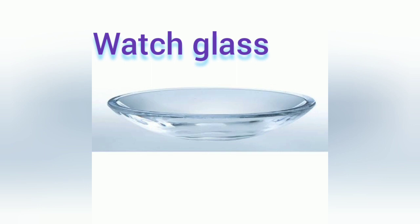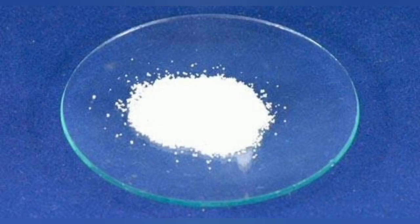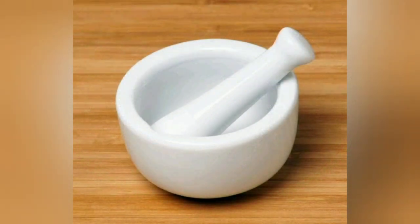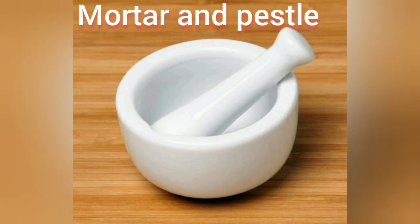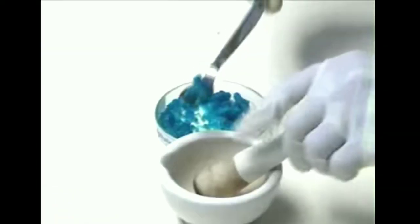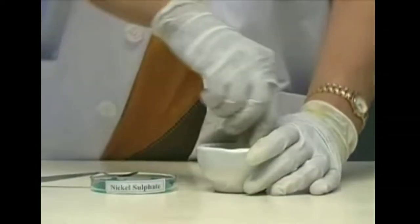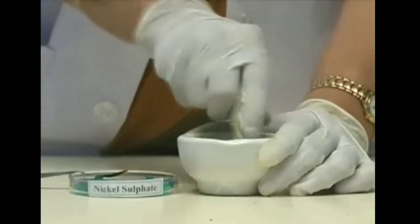A watch glass is a circular, slightly concave piece of glass. It is used for holding small quantities of solutions, water, or powdered substances for observations. Mortar and pestle are used to crush, grind, and mix solid substances. The mortar is a bowl made of porcelain in which the solid substance is placed, while the pestle is a heavy stick made of porcelain used to grind the substance by crushing.